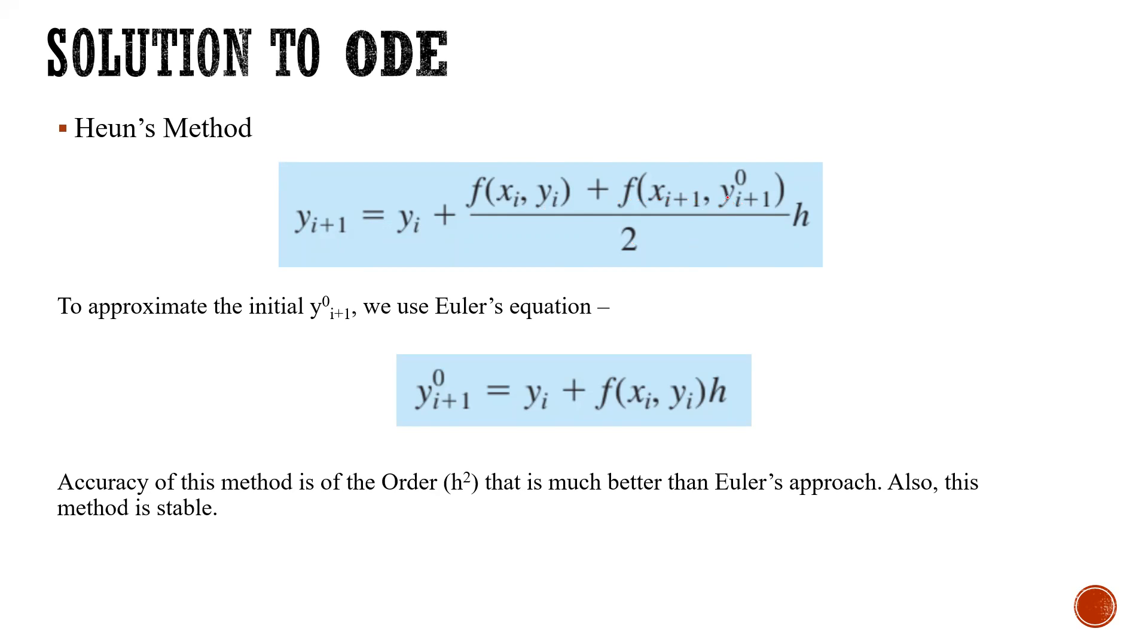Now to approximate the y_{i+1}^0, we use Euler's equation because it is a good approximation. So y_{i+1} equals y_i plus f(x_i, y_i) times h. Accuracy of this method is of the order h squared, that is, it is much better than Euler's method. Also, this method is stable.